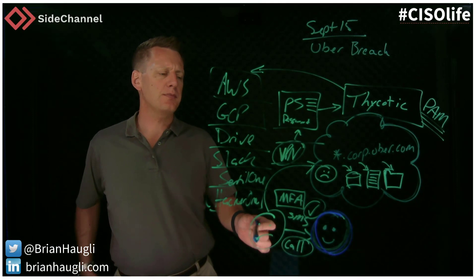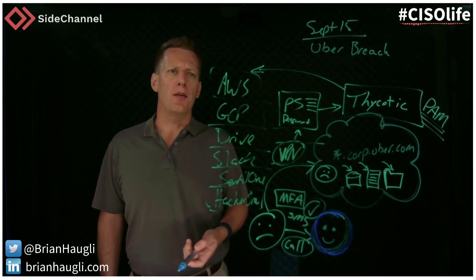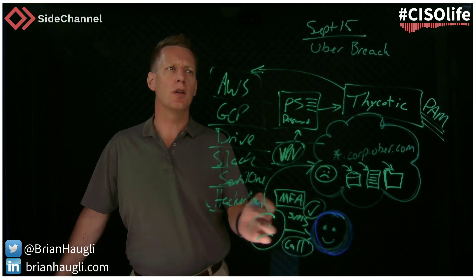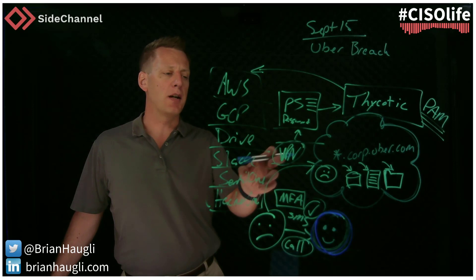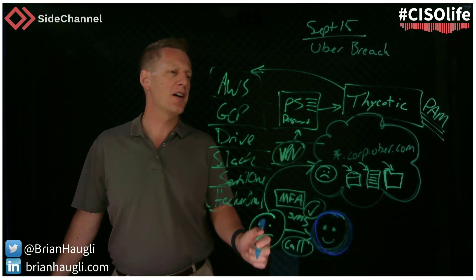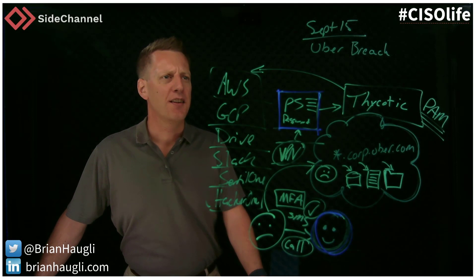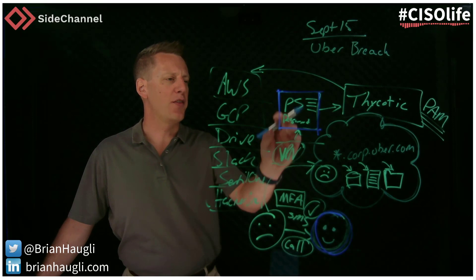Was there a second challenge on the VPN? There are technologies that can second and third challenge an individual — for example, flagging that a login is coming from an unrecognized location even after MFA is passed. But I think the coup de grâce really is hard-coded passwords inside of a PowerShell script sitting on a device or file share that the attacker was able to find — that seems like a clear no-no.